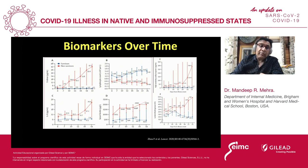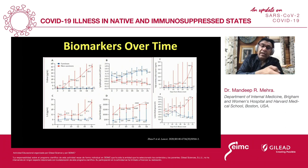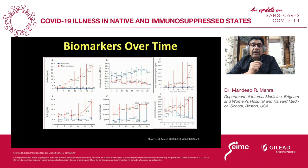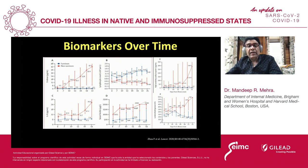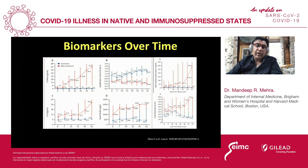Looking at interleukin-6, serum ferritin, and lactate dehydrogenase, a very interesting factor becomes evident: these markers get elevated rather early, with differences emerging even in the early stages. Ferritin as an acute phase reactant is a very good biomarker. The average ferritin by day four in patients likely not to survive was close to 1,000. Whenever ferritin hits above 500 in our patient cases, we become extremely concerned and closely follow non-viral associated hyperinflammatory pathways for that patient. These time trends of biomarkers are very important to keep in mind.